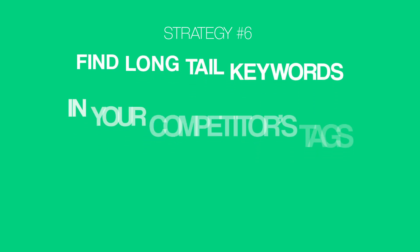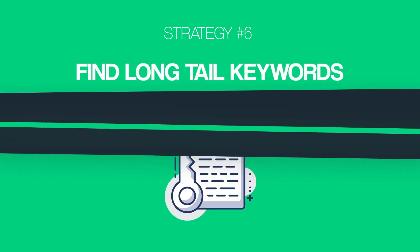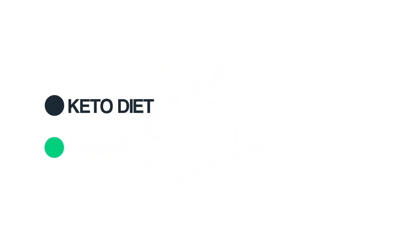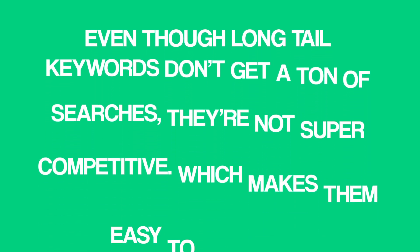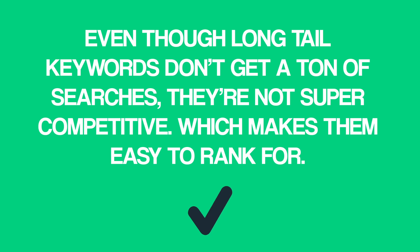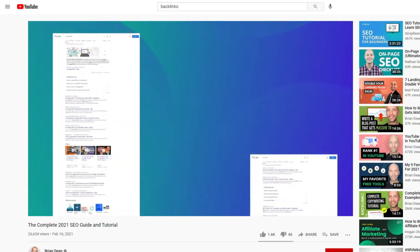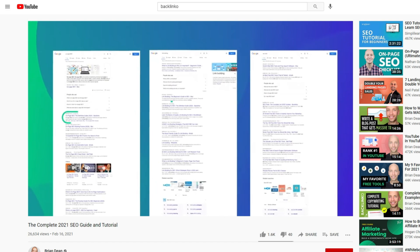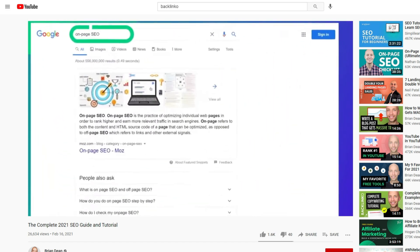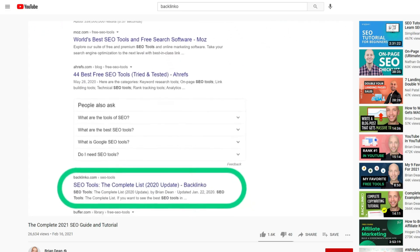Now it's time for strategy number six: find long-tail keywords in your competitor's tags. As you probably know, long-tail keywords are keywords that are super specific. For example, a normal keyword is something like "keto diet," while a long-tail version would be something like "best keto diet dessert recipes." Even though long-tail keywords don't get a ton of searches, they're also not that competitive, which makes them easy to rank for. And a lot of these long-tail keywords are hiding in plain sight — other videos in your niche are probably already using great long-tail keywords in their tags.